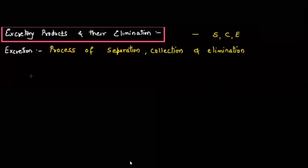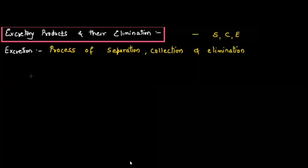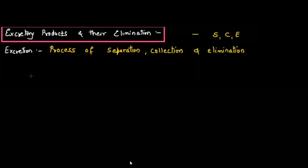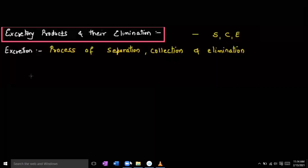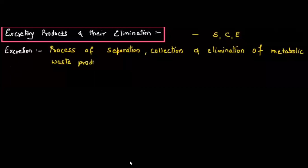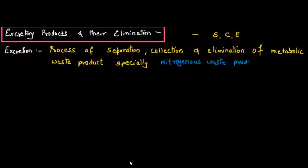Excretion basically means three important alphabets: S, C, and E. S stands for separation, C stands for collection, and E stands for elimination. So excretion is generally a special type of process where there is separation taking place, collection taking place, and elimination of the nitrogenous waste material. Excretion is defined as the process of separation, collection, and elimination of metabolic waste, also called nitrogenous waste.